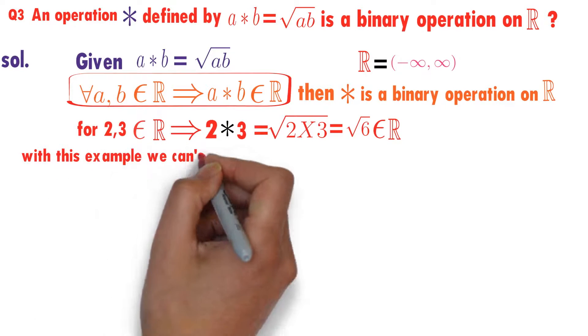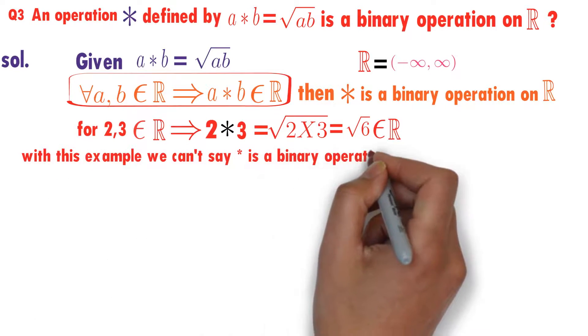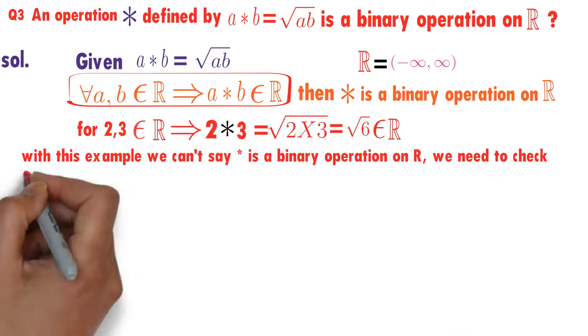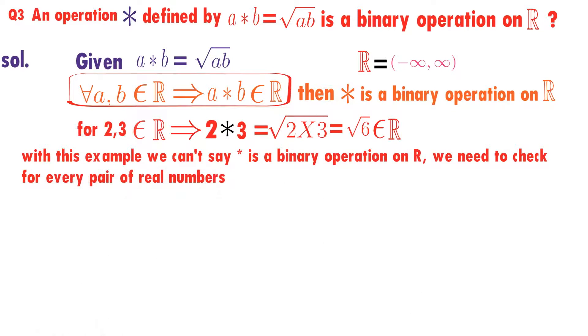Is root 6 a real number? Yes, root 6 is a real number. With this example, we cannot say star is a binary operation on real numbers. We need to check for every pair of real numbers.